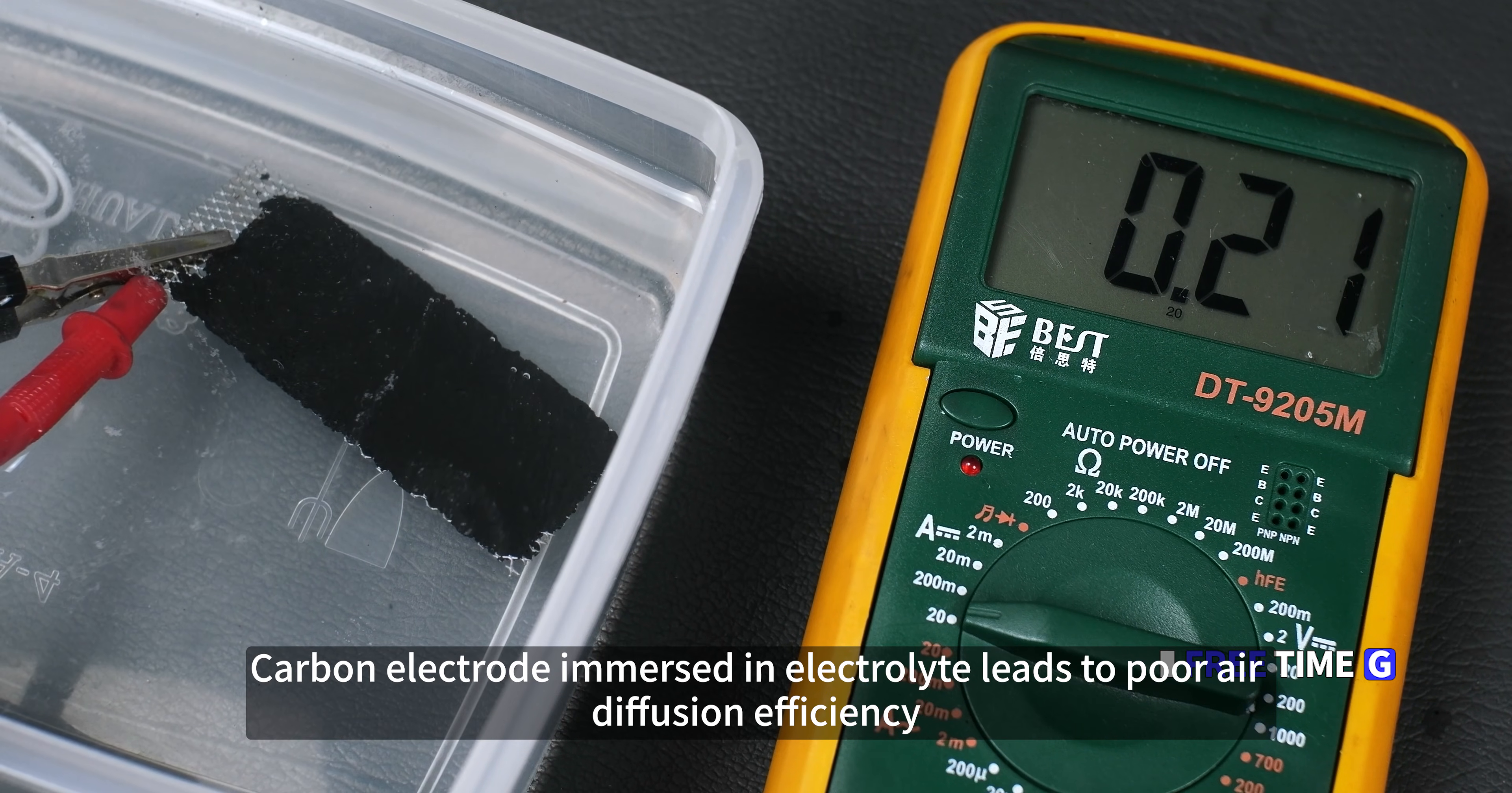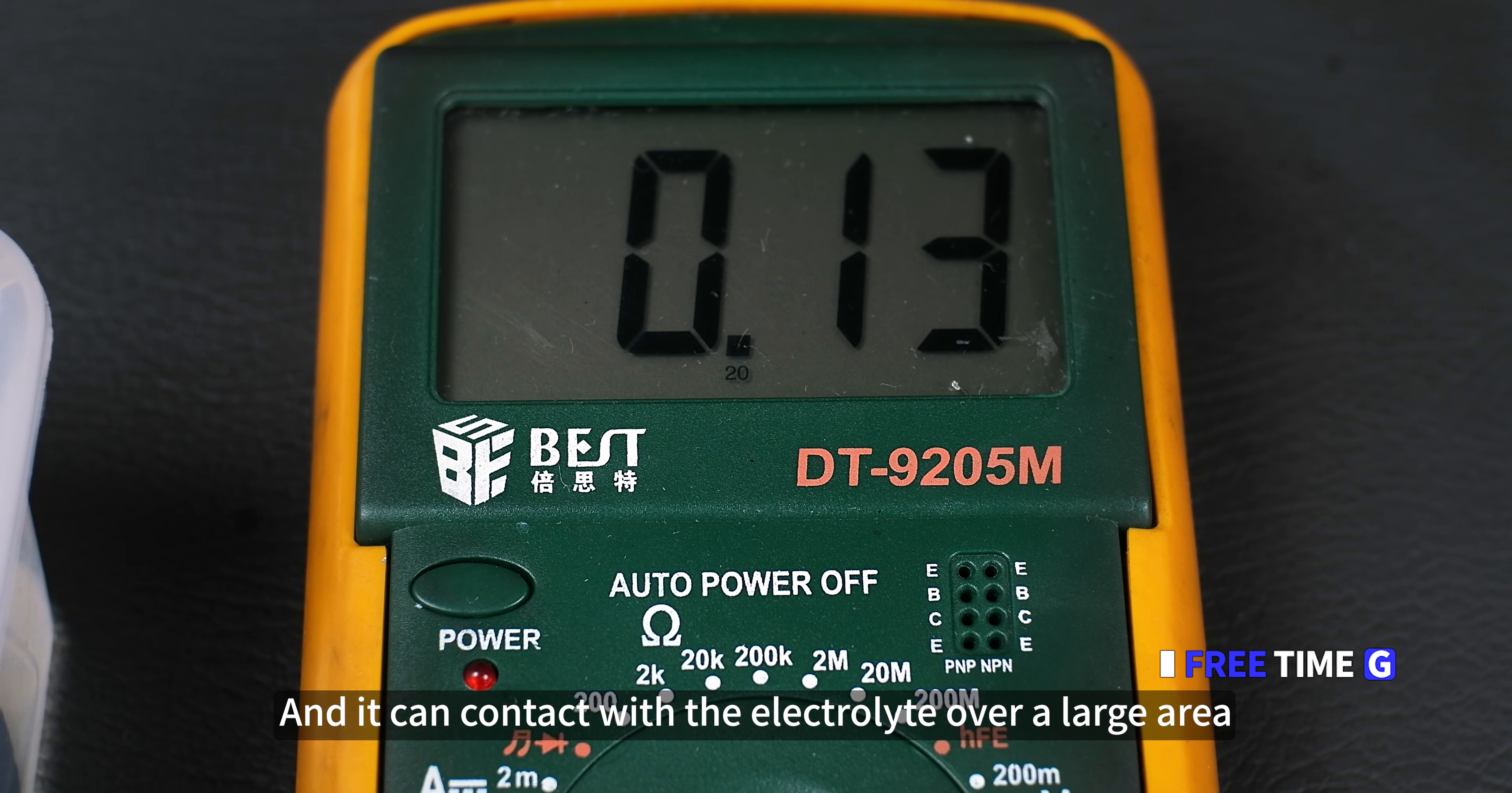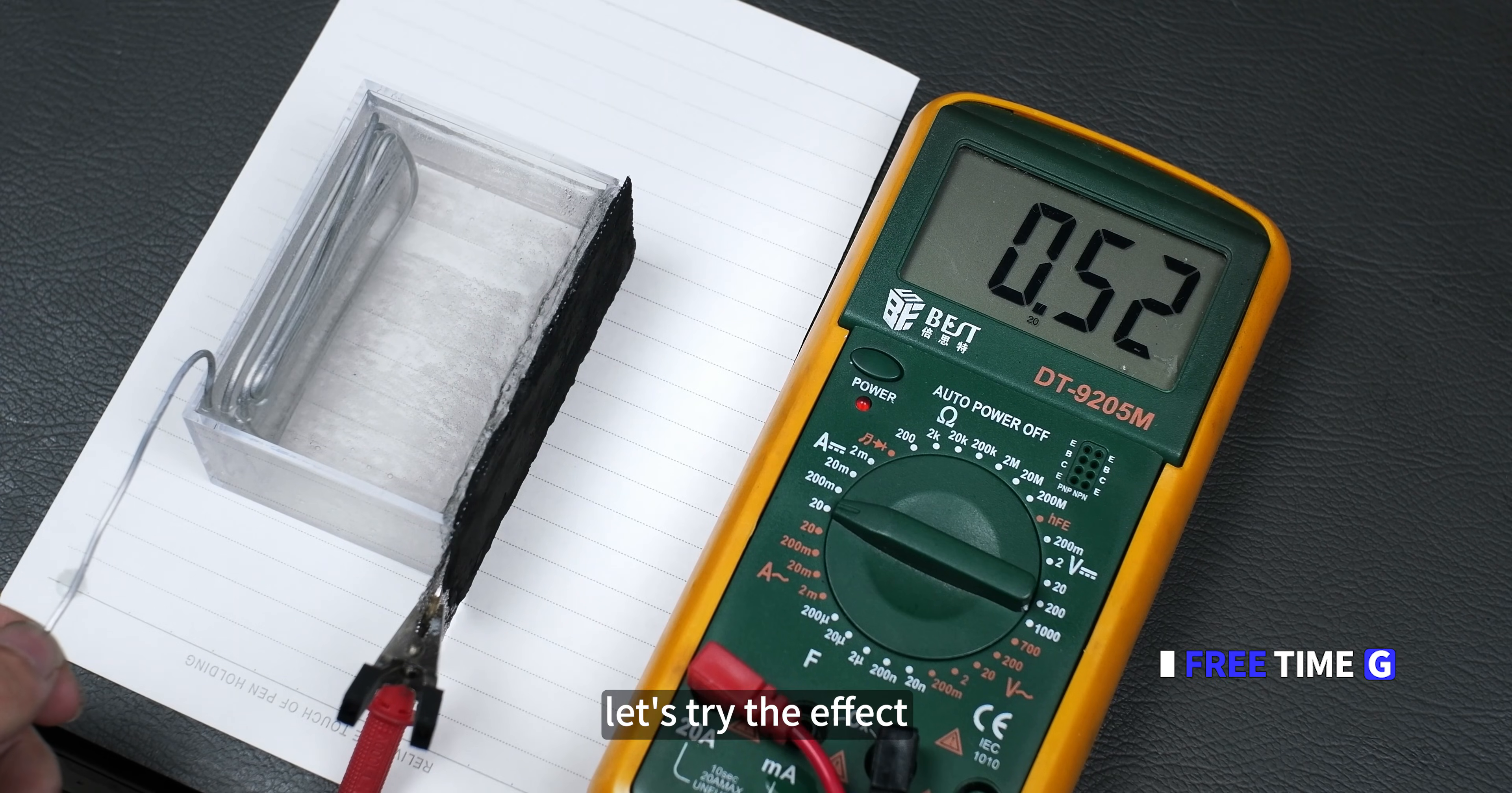Carbon electrode demonstrates an electrolyte leads to poor wear diffusion efficiency, and the current decreases slowly over time. This air electrode can the air be diffused in from the outside with maximum efficiency, and you can contact with the electrolyte over a large area. The mainstream approach is the air electrode faces the air, one side facing the electrolyte. Just make a hole in the container, use sealant to seal the electrode. Okay, let's try the effect.